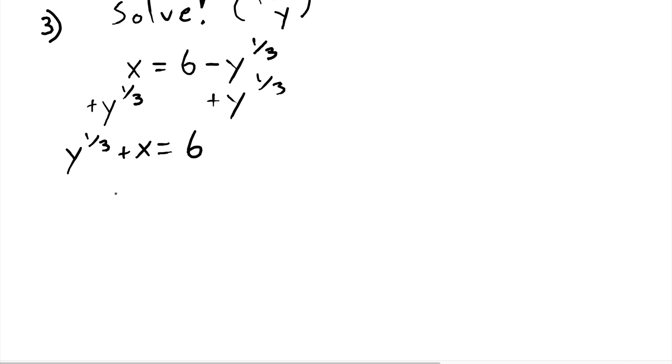Now, I need to get y by itself. So, what does that mean? I'm going to subtract x from both sides. And now, I need to deal with this one-third exponent. And, like I said, I've got y to the one-third. That's the same thing as the cube root of y. What I need to do is get rid of that cube root.